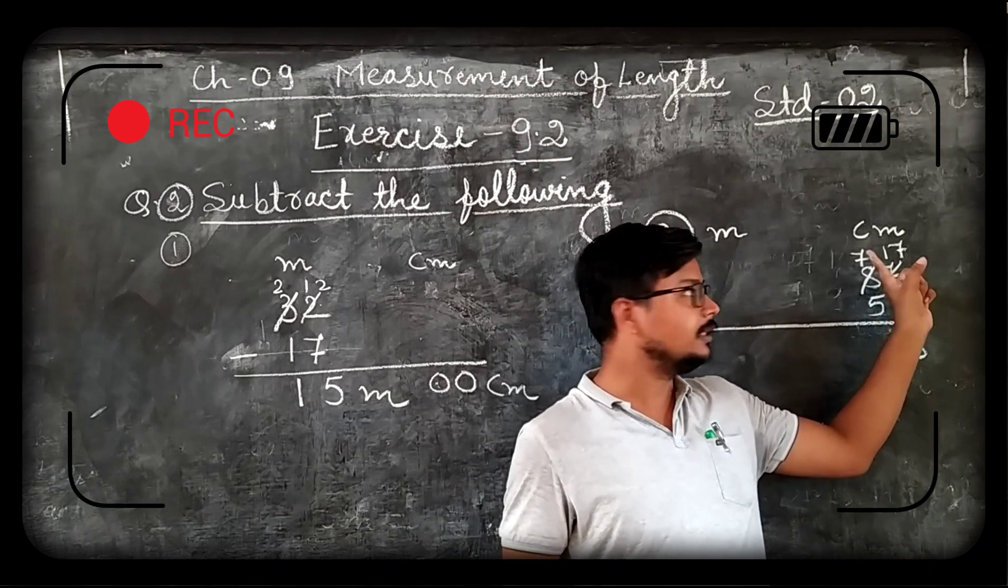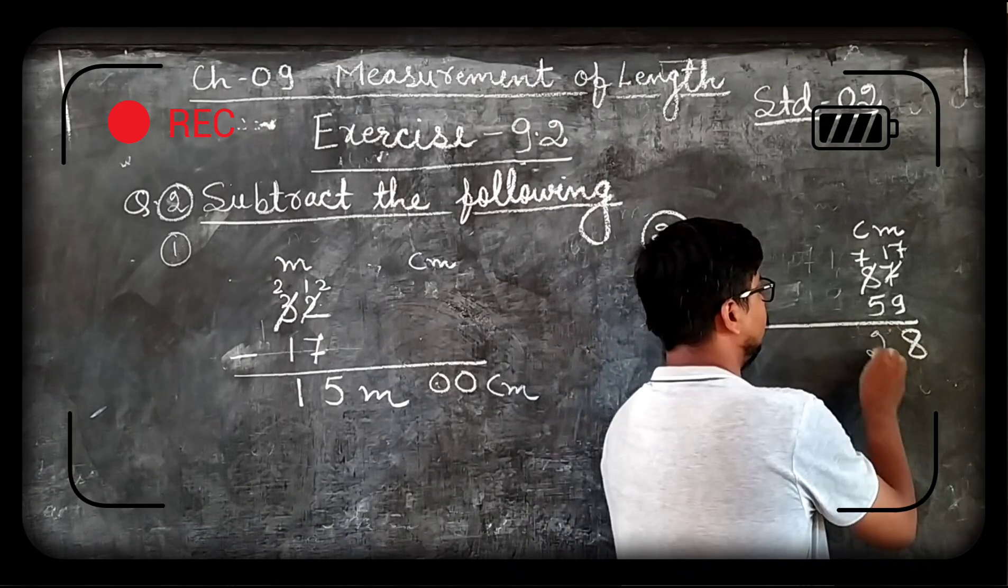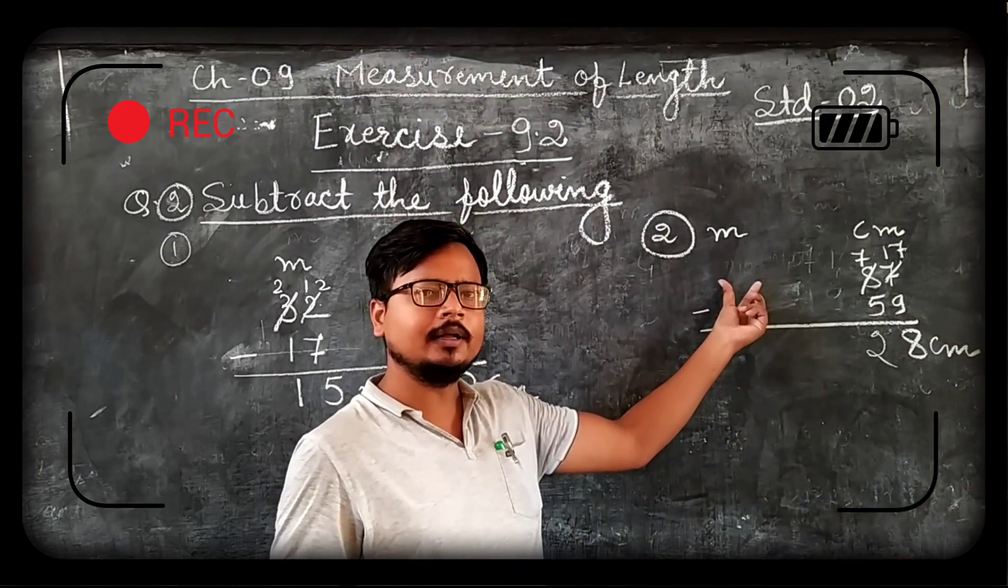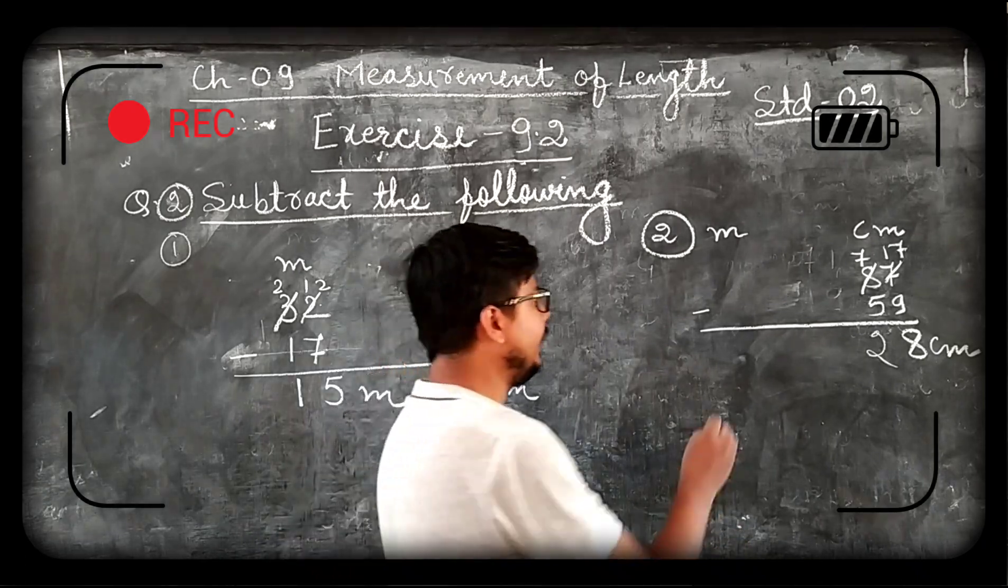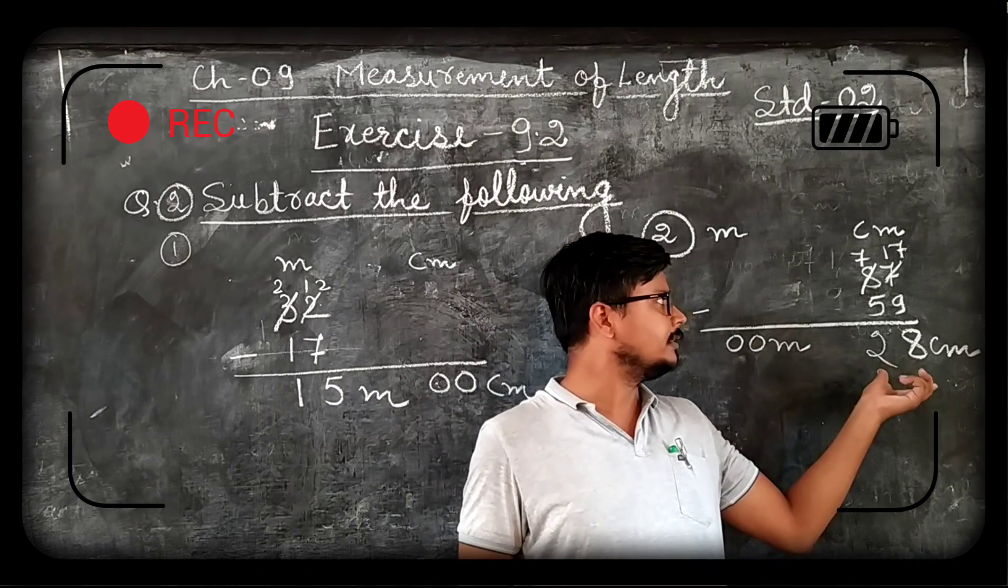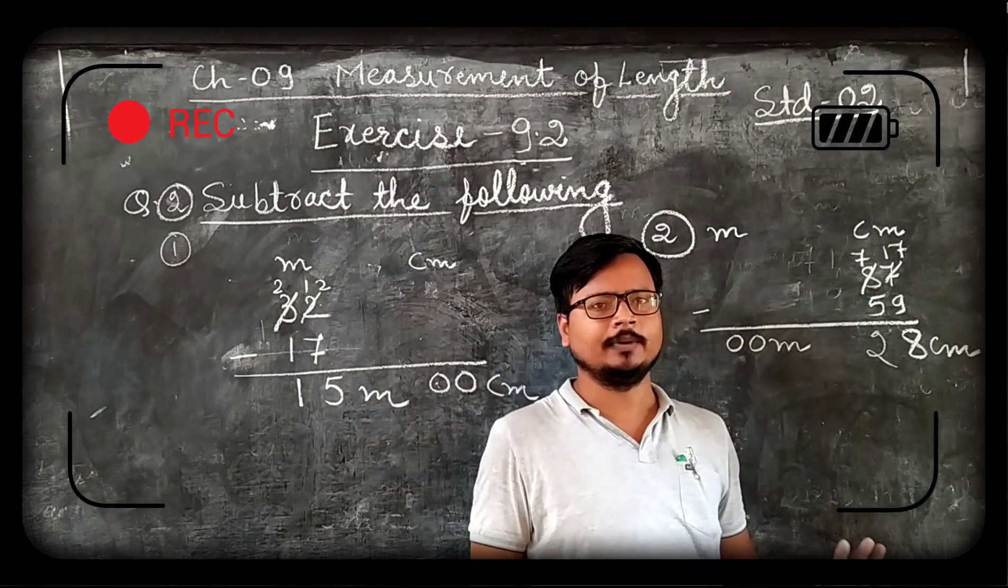Now this it became 7. This 8 became 7. 7 minus 5 is 2. And as you can see here in meter nothing is given. So we simply write 0 meter. So you can say our answer becomes either 28 centimeter or 0 meter 28 centimeter.